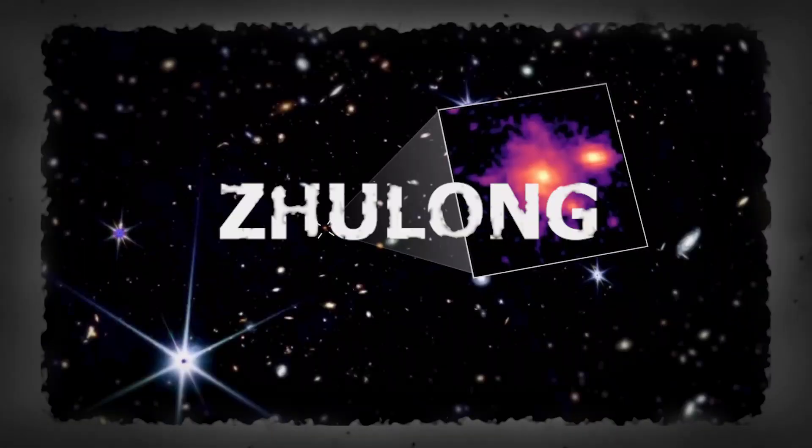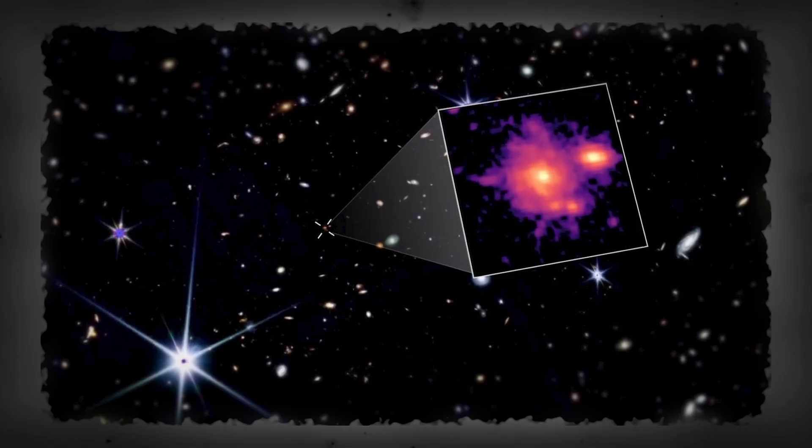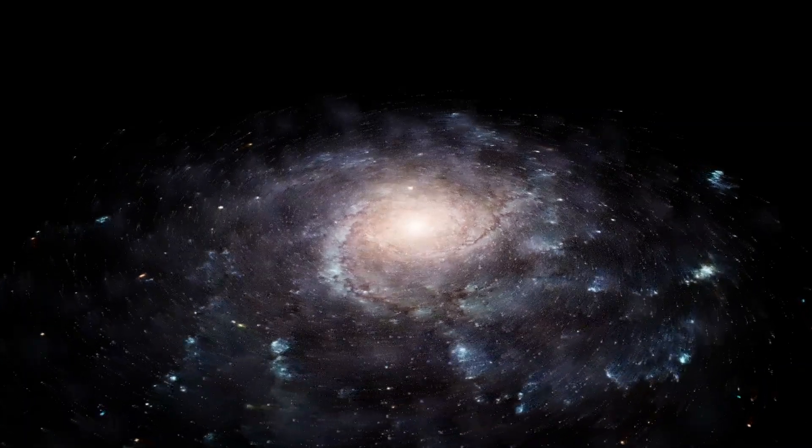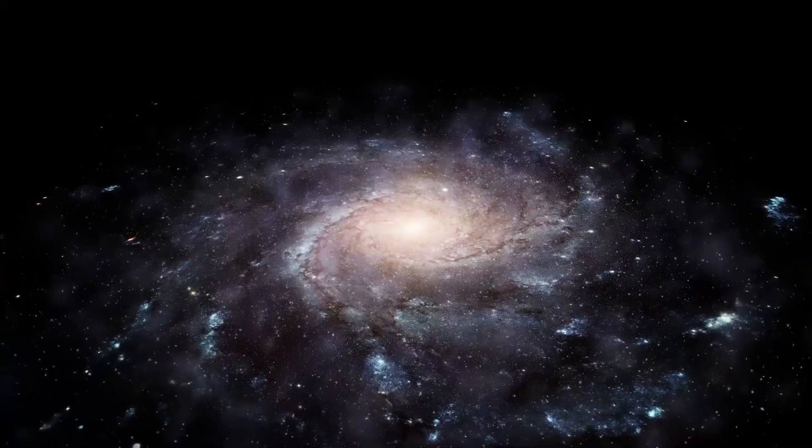Astronomers named it Zhulung, which means mighty dragon in Mandarin. And mighty it is. At first glance, Zhulung looks a lot like our own Milky Way, a classic spiral galaxy with arms gracefully winding around a central core. That's not unusual. Except for one problem.